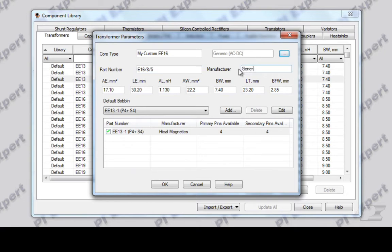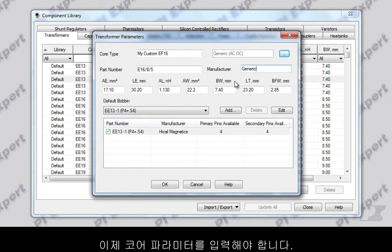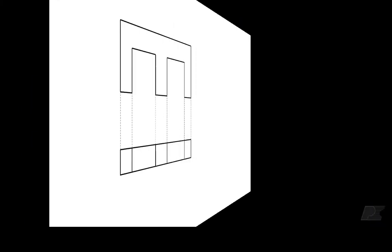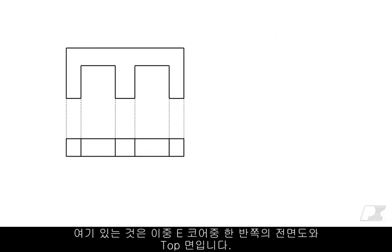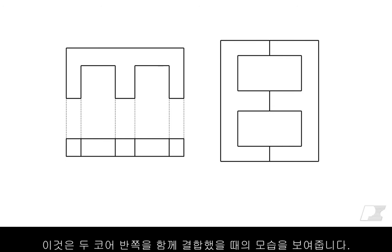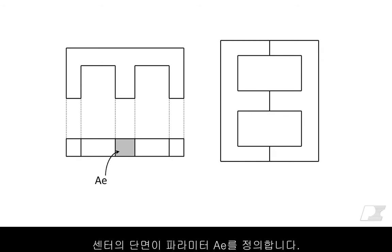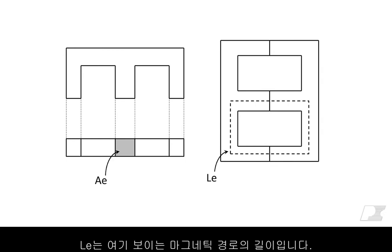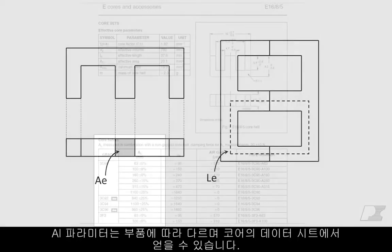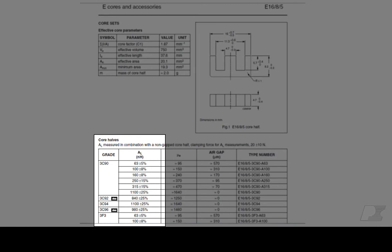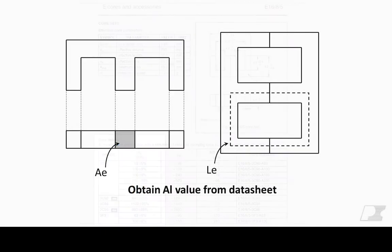Now I need to enter the core parameters. Let's take a moment and understand what each of these seven variables mean. What I have here is the front and top views of one half of a double-E core. This is what two core halves look like when they are joined together. The cross-section of the center leg is what defines parameter AE. LE is the length of the magnetic path as shown here. AL is a parameter that is material dependent and can be obtained from the datasheet of the core.